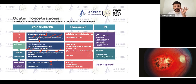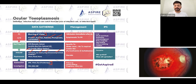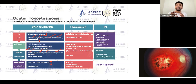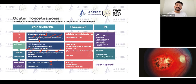Key risk factors: immunocompromised patients, pregnant females, and those living with a cat. Rather than directly asking 'do you live with a cat?', ask open questions like 'whom do you live with?' The patient may volunteer that they live with their cat — that gives you the answer you need for toxoplasmosis.